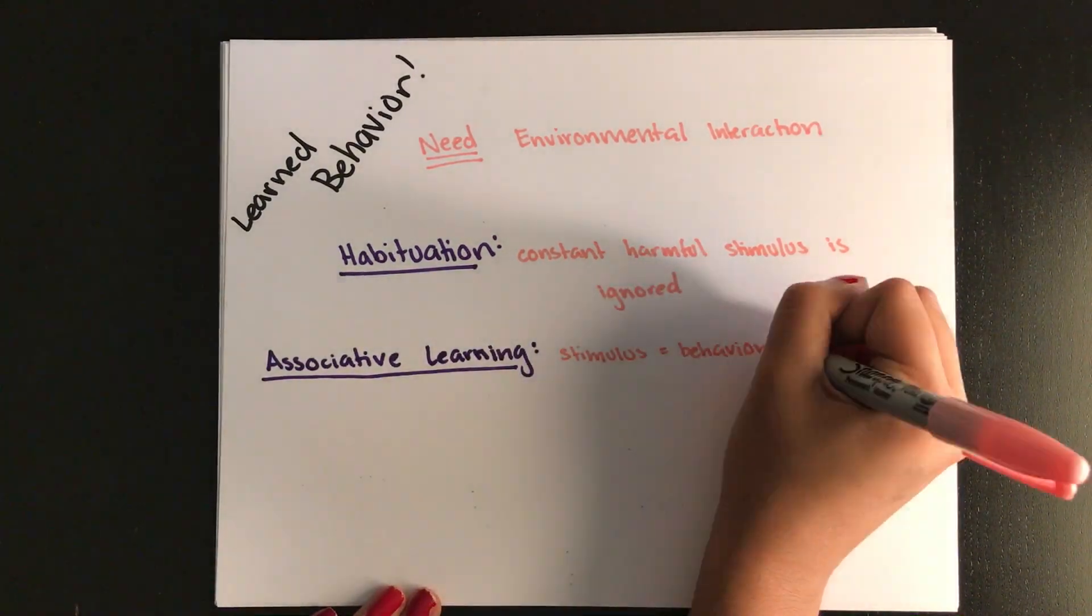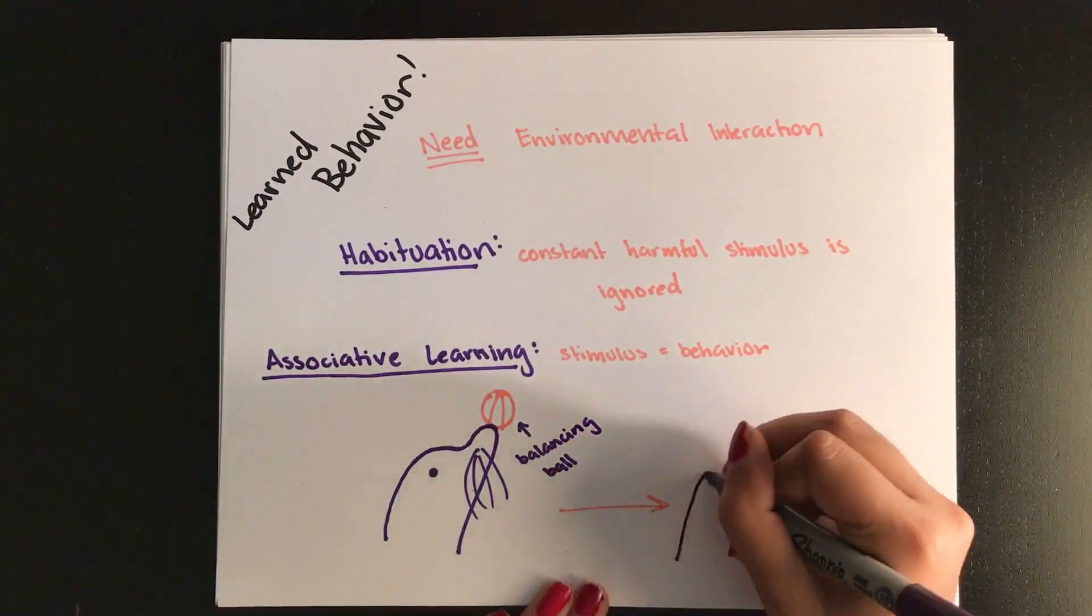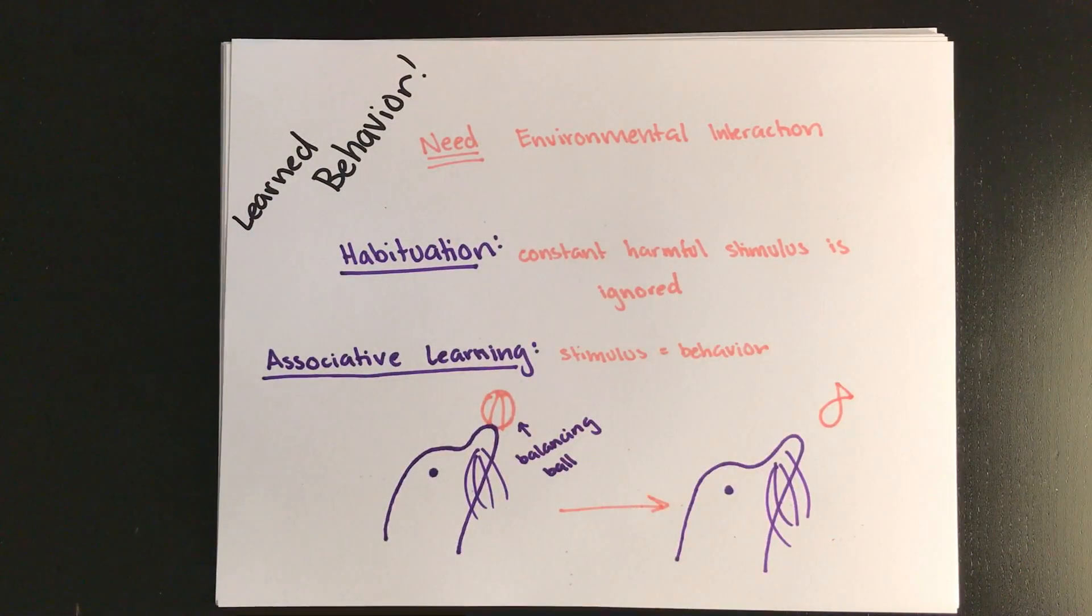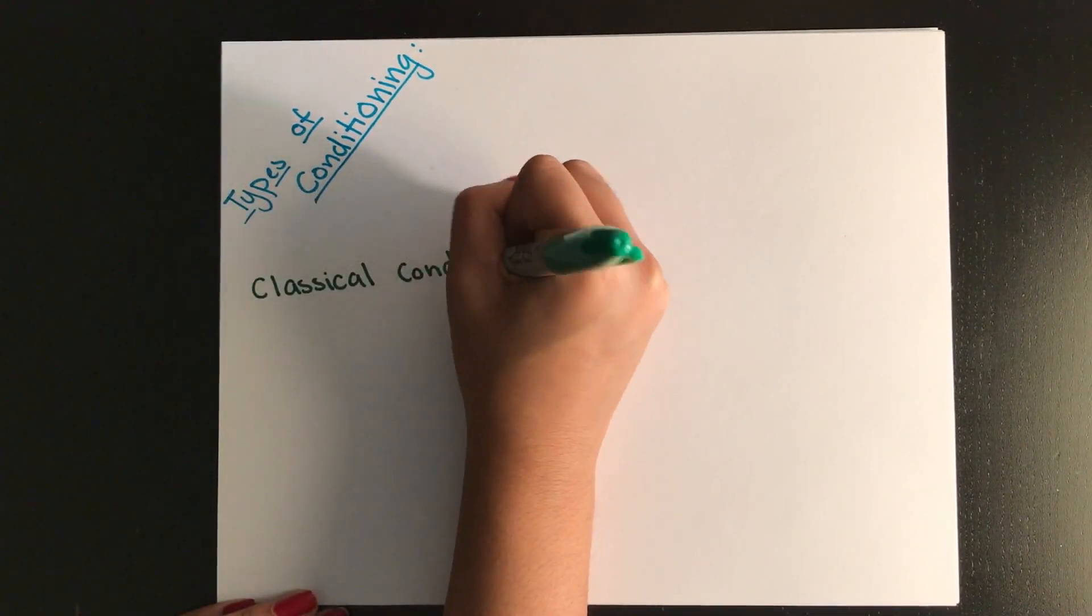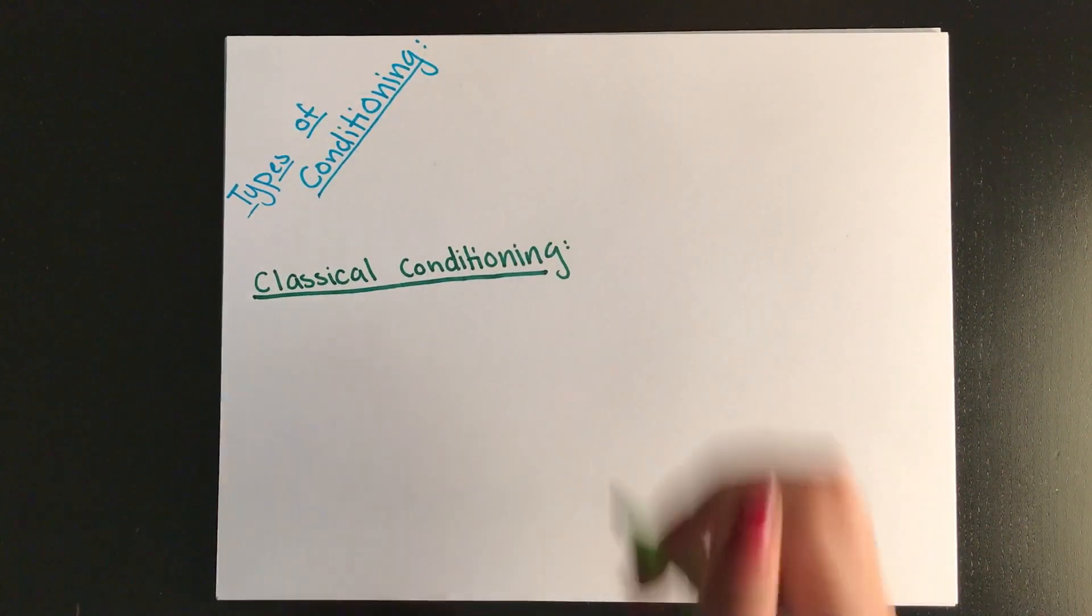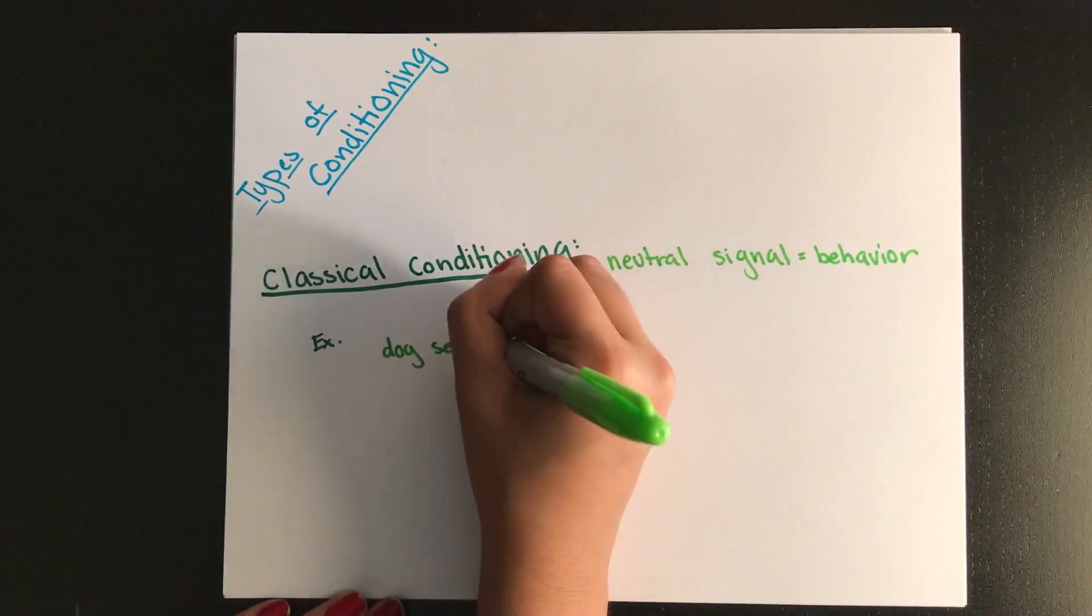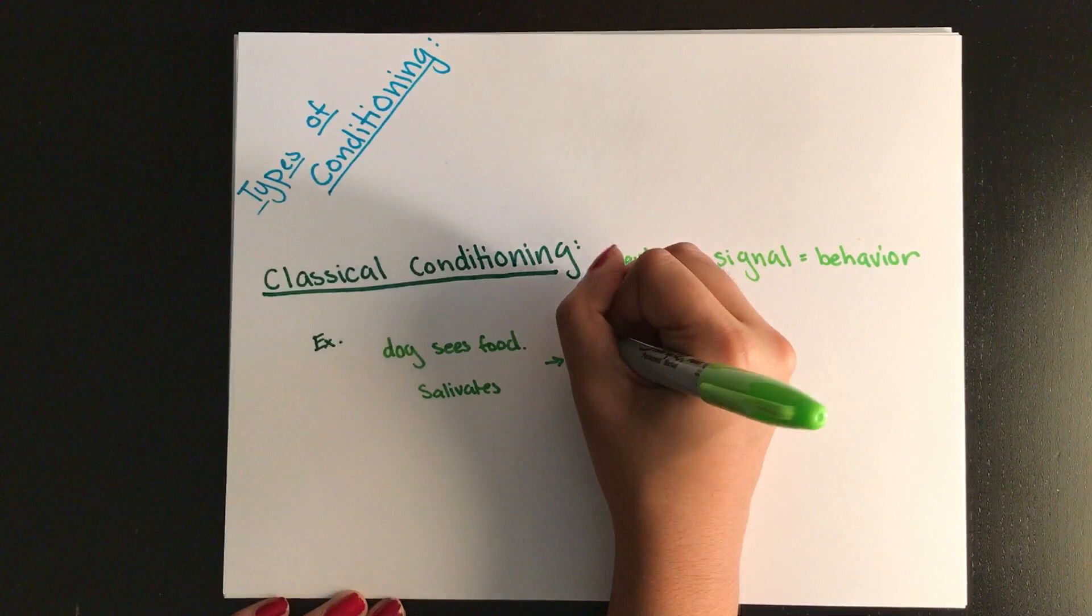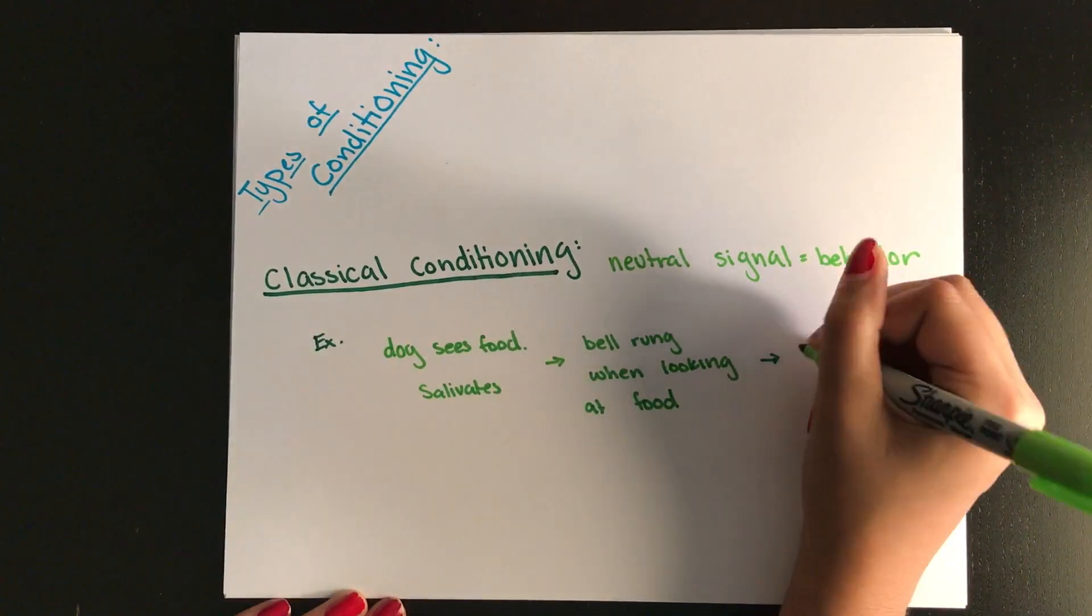Next we're going to talk about associative learning, and this occurs when a stimulus is mentally associated with a specific behavior. We're also going to define classical and operant conditioning. Classical conditioning is when a neutral signal will lead to a reflex. An example of this is a dog looking at its bowl of food and salivating. And now every time a bowl of food is given to the dog, a bell rings. So the bell ringing is our neutral stimulus.